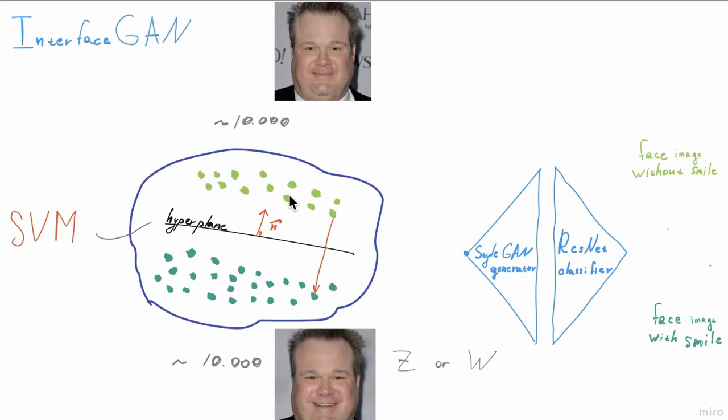After we have found the global editing direction of attribute smile, we can take our picture, find a point in latent space W that represents this picture, move this point along the global attribute direction smile, and use this new position of our point to generate a new image with a given attribute smile.